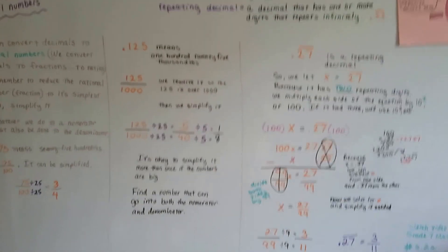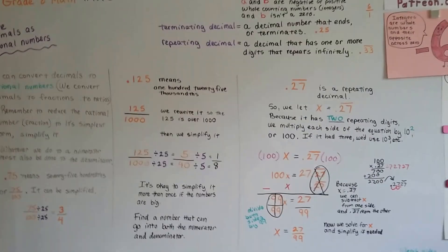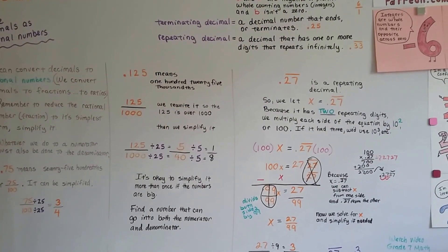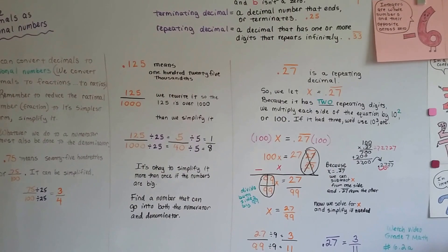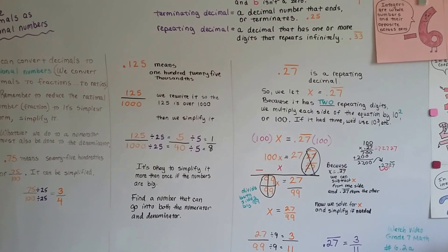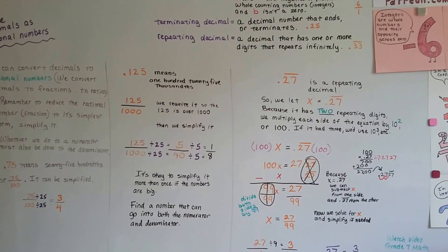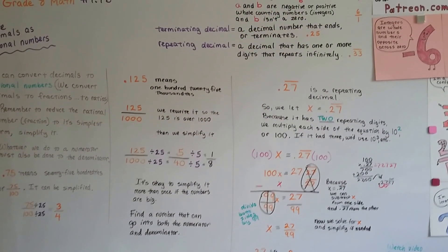Alright, so that's how you write decimals as rational numbers. I'm going to talk about finding square roots and cube roots in the next video. I hope this was helpful. Don't forget to hit the like button if it was helpful so I know. And don't forget you can follow me on Twitter. See you next video. Bye.